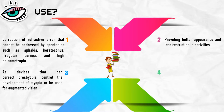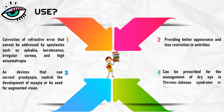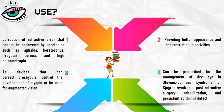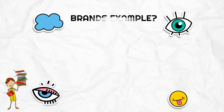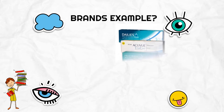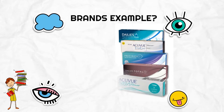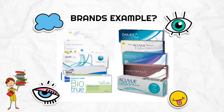And lastly, contact lenses can be prescribed for the management of dry eye in Stevens-Johnson syndrome or Sjögren's syndrome, post-refractive surgery rehabilitation, and persistent epithelial defect. There are a few examples of contact lens brands such as Acuvue, Biotrue, Dailies, Clarity 1 Day, and Precision 1.